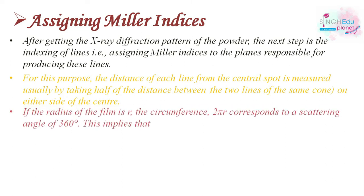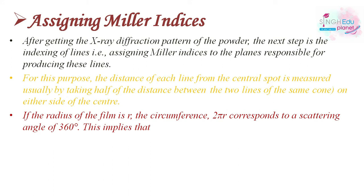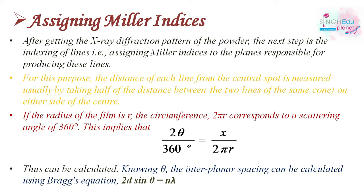If the radius of the film is r, then the circumference is 2πr. The scattering angle 2-theta spans the full 360 degrees of the circle, giving us the formula relating 2-theta to the arc length x on the film. Once we calculate theta from this, we can use the Bragg equation — 2d sinθ = nλ — to calculate the interplanar spacing d. This way we can determine the crystal structure quite easily.